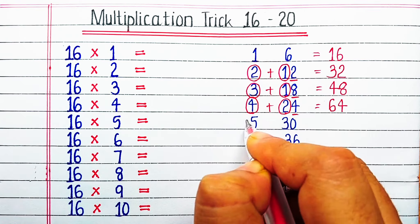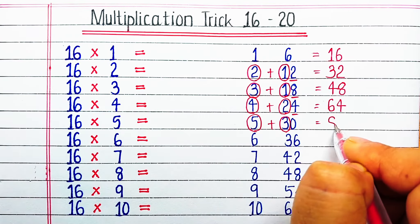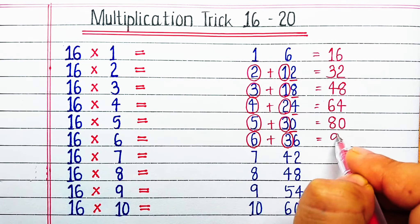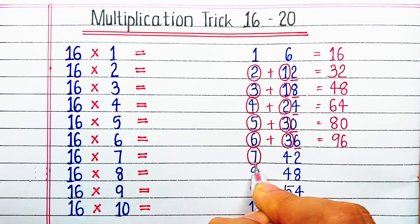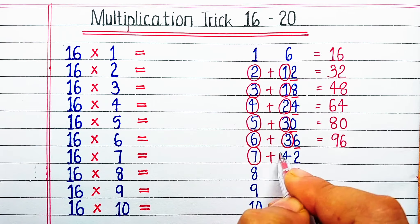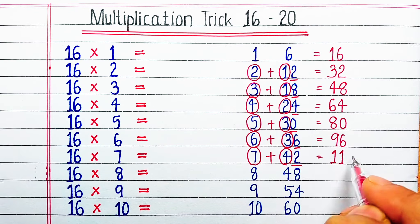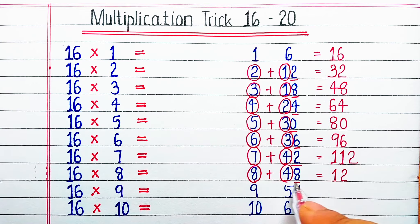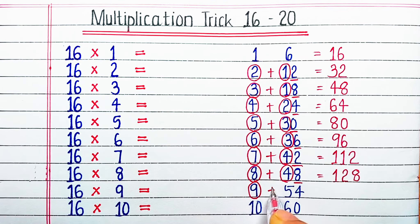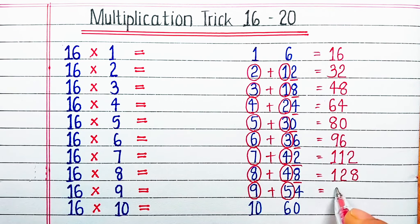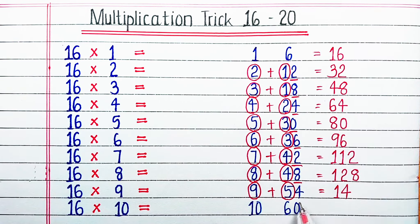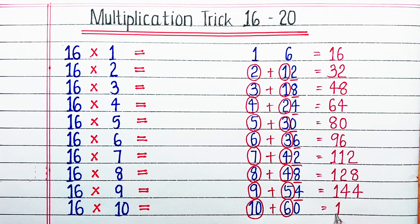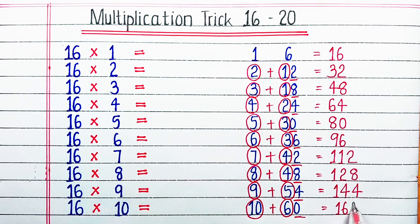5+3=8 and 0. Then 6+3=9, then 6. Now 7+4=11, then 2. Next 8+4=12, and we write 8 as it is. 9+5=14, and we write 4 as it is. Then 10+6=16 and then 0.